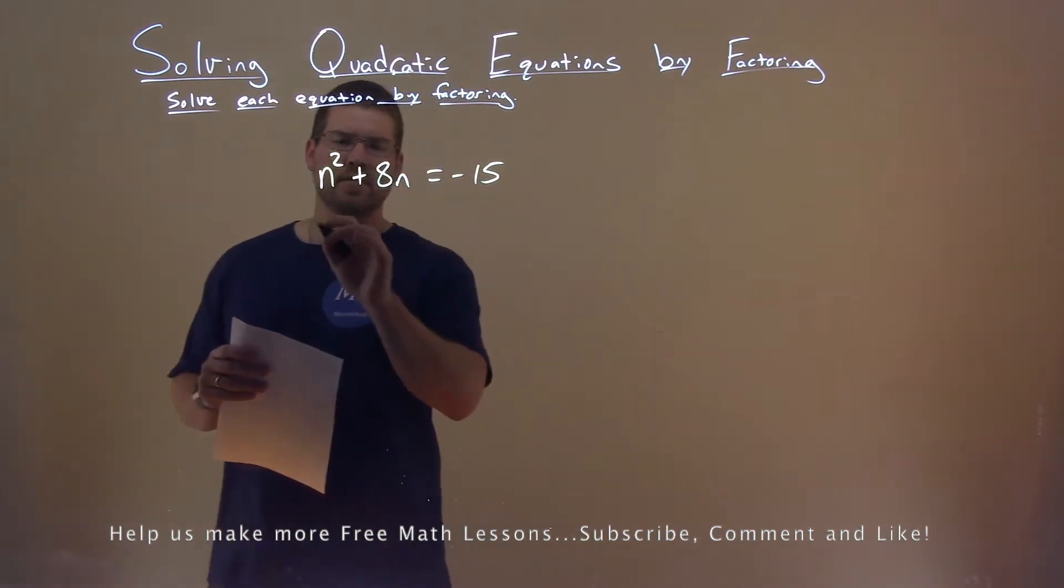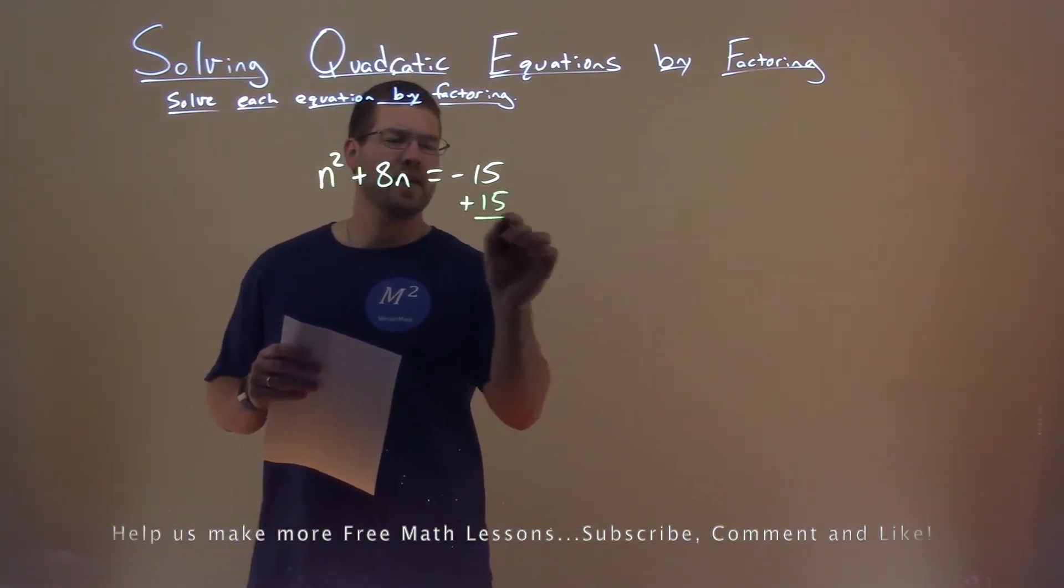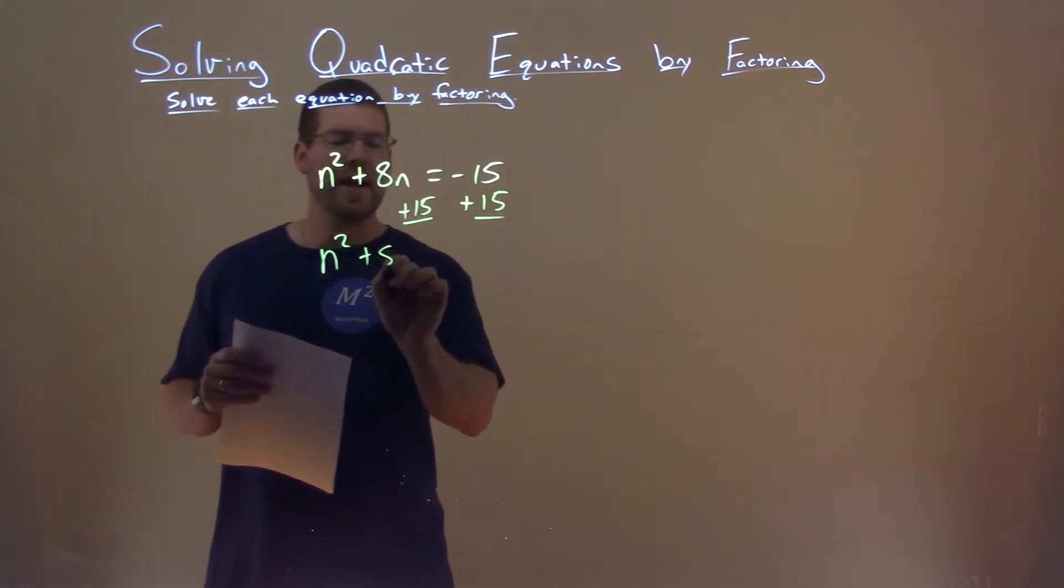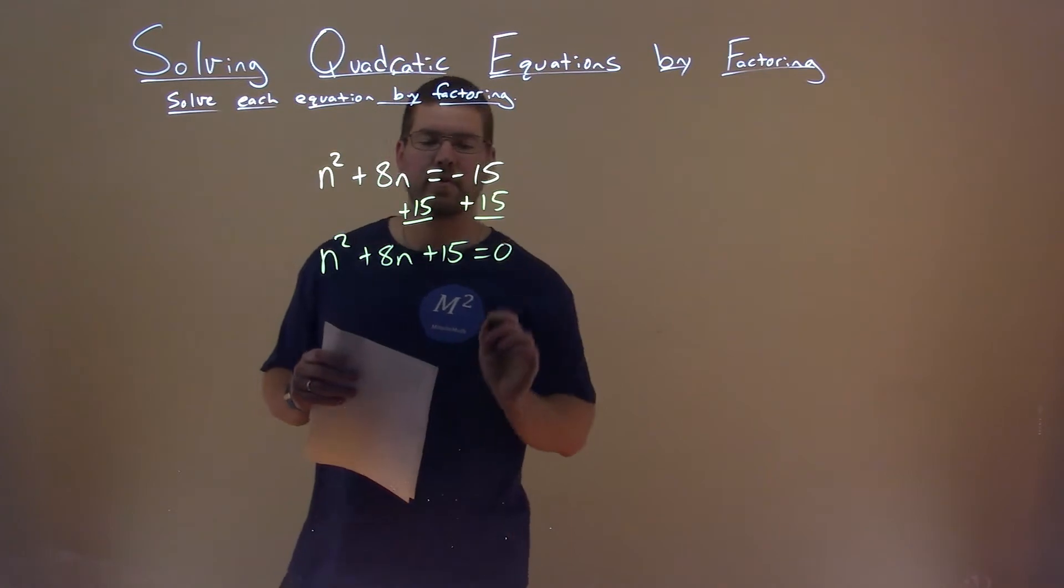Well, I need to get this equal to zero, so to do that, I'm adding 15 to both sides. We have n squared plus 8n plus 15 now equals zero.